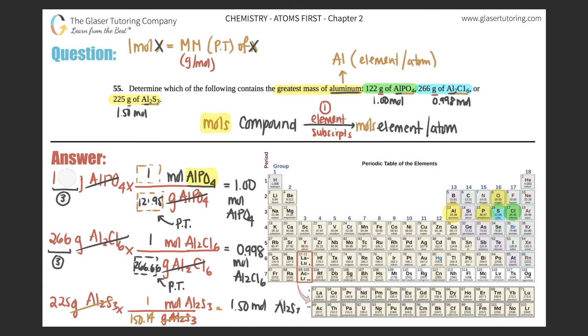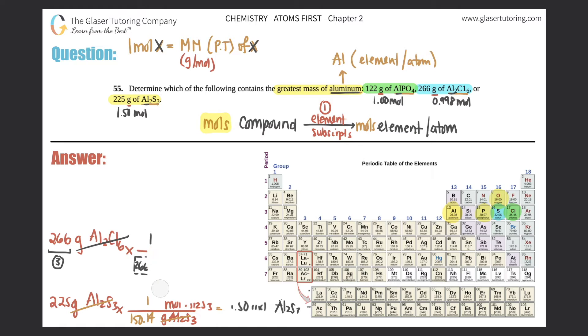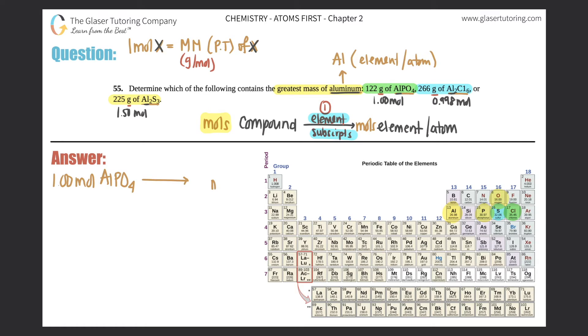All right, so now I'm going to erase because now we have moles of the compound, so now we can go to the moles of the individual aluminum element by multiplying by the element subscript. So let's see, we had 1.00 moles of AlPO4. If I want to find moles of just aluminum, what would I have to multiply by? Well, I would just have to multiply by how many aluminums are in this compound. If it's Al, there's one Al, so basically you just times by one. So this would still be 1.00 moles of aluminum.